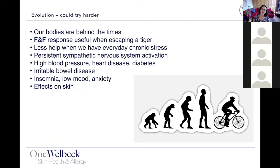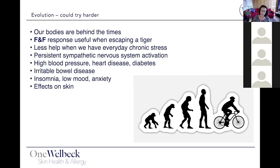Everyday chronic stress doesn't allow those responses to settle. As a result, we have persistent sympathetic nervous system activation associated with hypertension, ischemic heart disease, diabetes, irritable bowel disease, insomnia, low mood, anxiety — and effects on the skin.